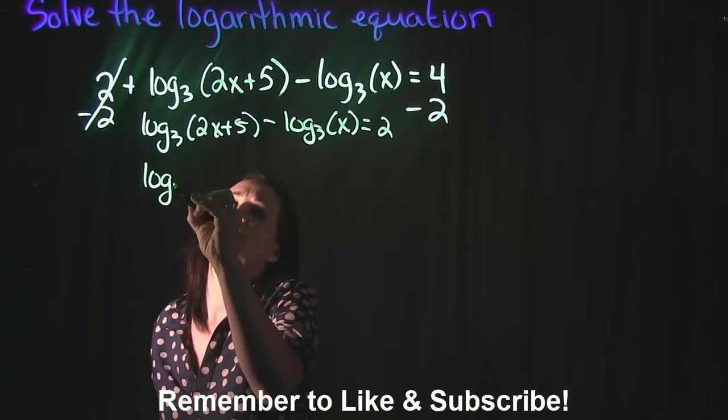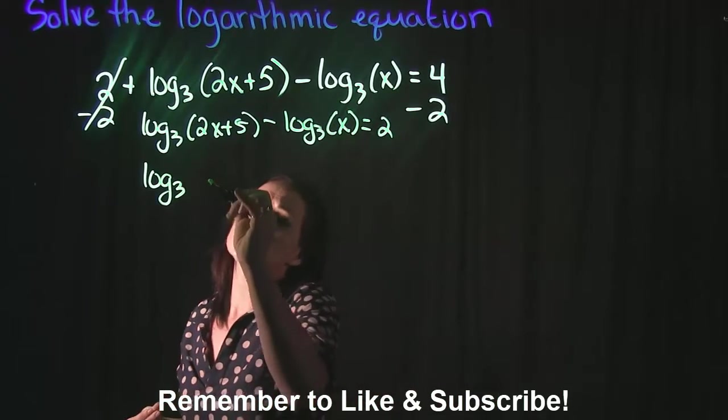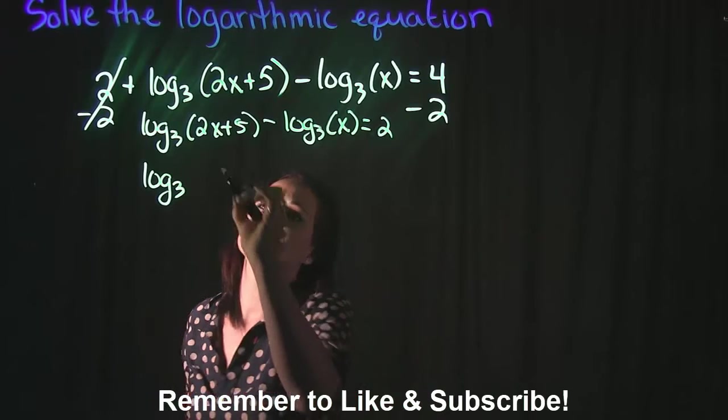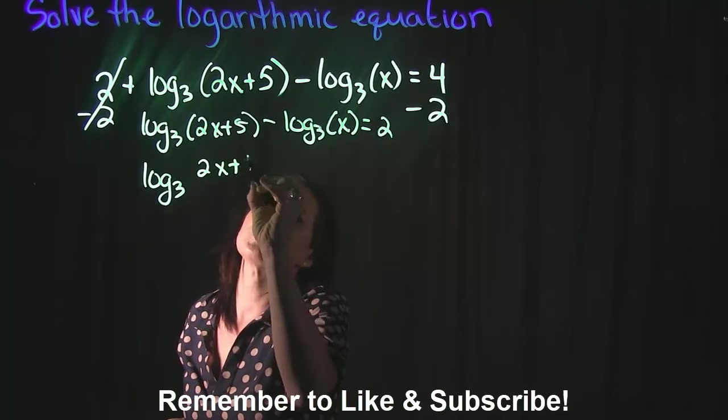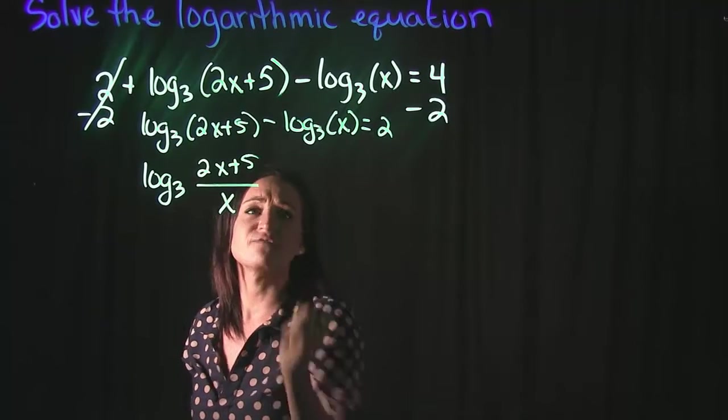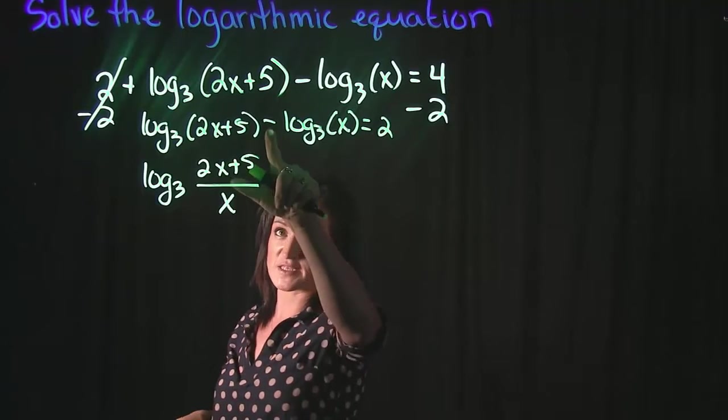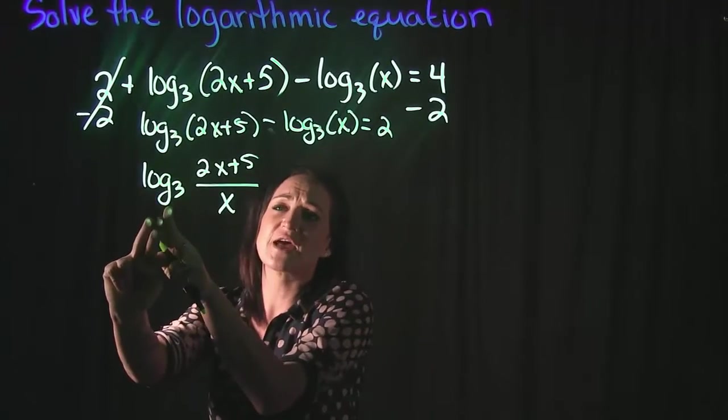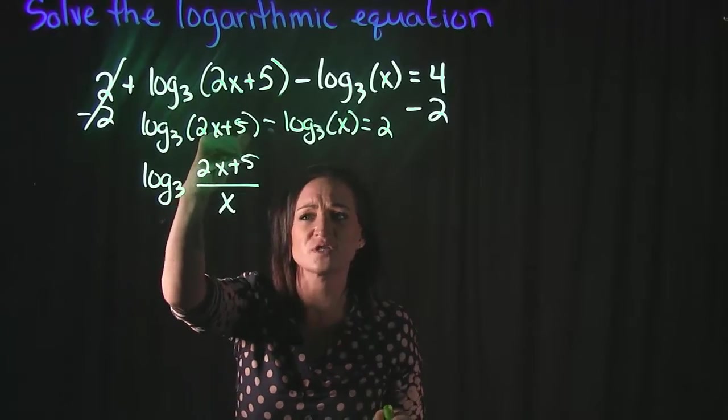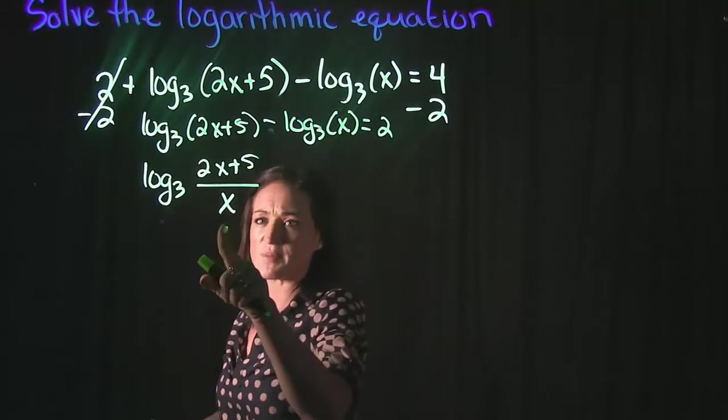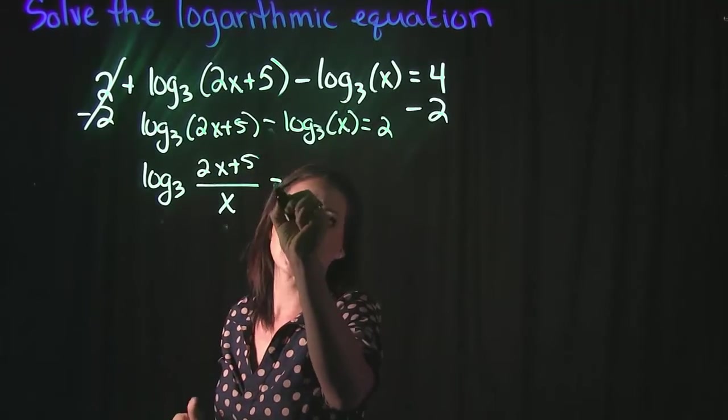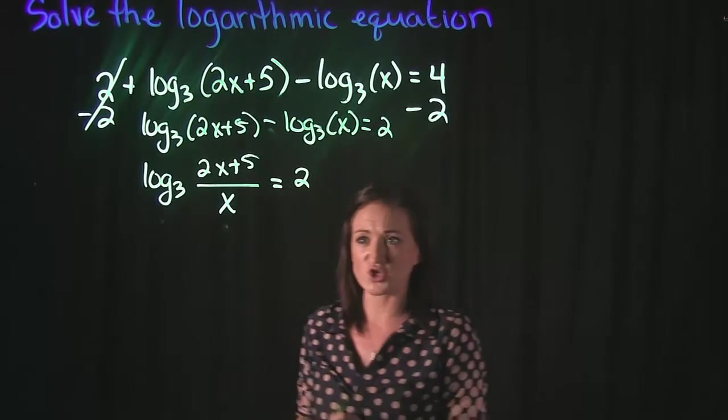So what I'm going to do is I'm going to combine these together and I'm going to say 2x plus 5 is being divided by x because of this subtraction here. We can group the logs together. The 2x plus 5 goes in my numerator. The x goes in my denominator because of that minus sign. And this is still going to equal 2.